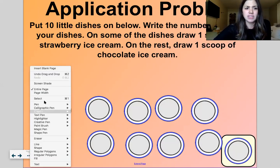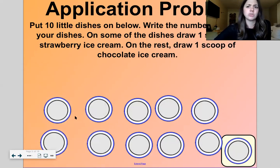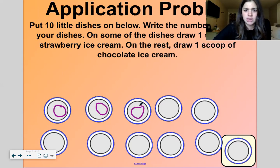On some of the dishes, draw one scoop of strawberry ice cream. Okay, on some of the dishes. Some. Well, some isn't really a number. So I'm just going to draw a scoop on like four. Does that sound good? Okay, four. One, two, three, four. That's some, right?